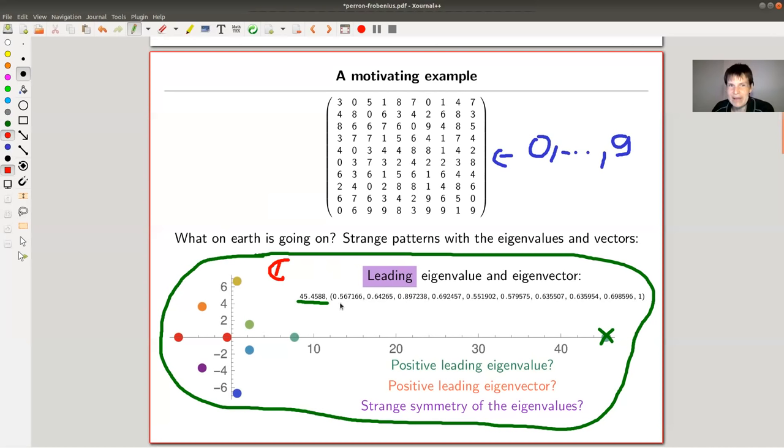So you also have a leading eigenvector. So the eigenvector for this eigenvalue is also, or it can be scaled such that it is completely positive. It's only real entries, all of them are positive. And what else is going on? You have a positive eigenvalue, you have a positive eigenvector and they're leading in a certain sense. So that's already strange because you're considering like a random matrix, but it gets even better.